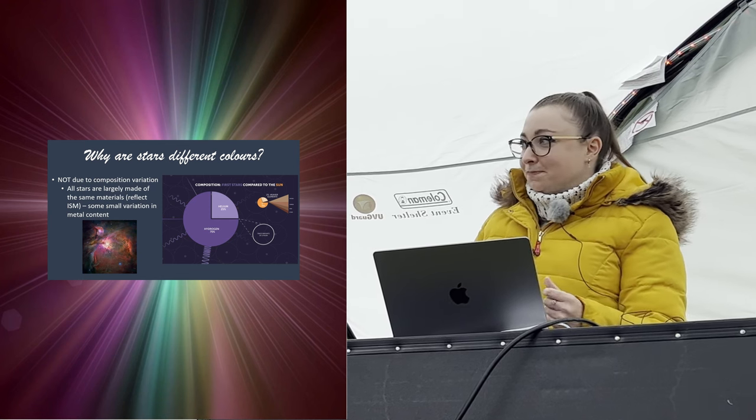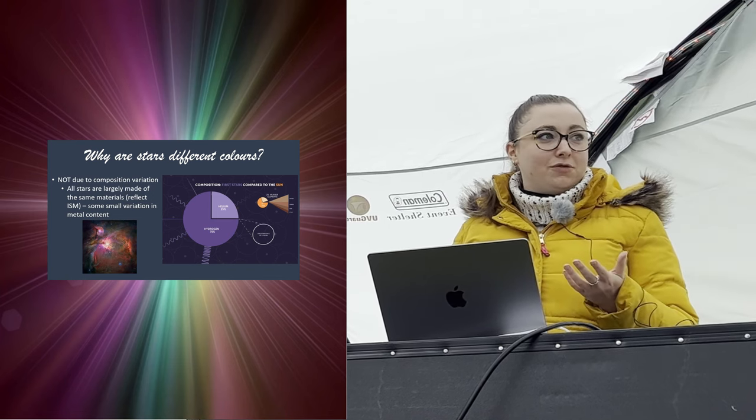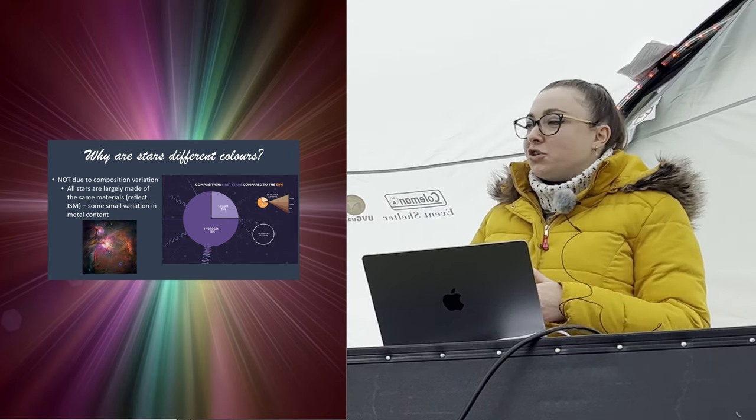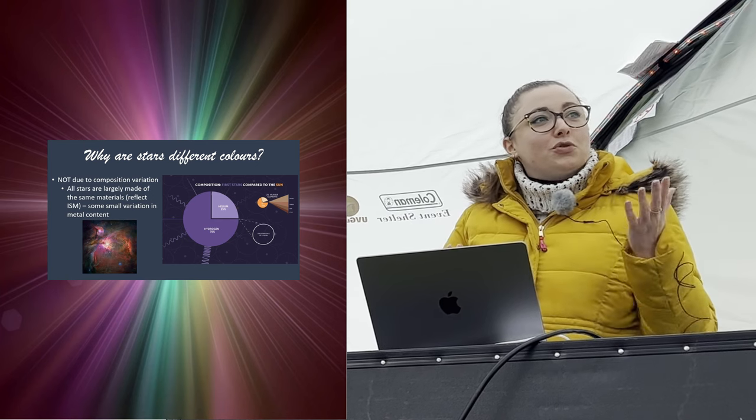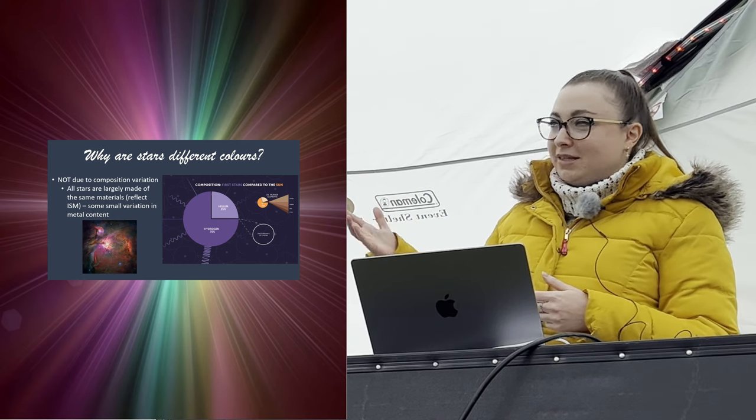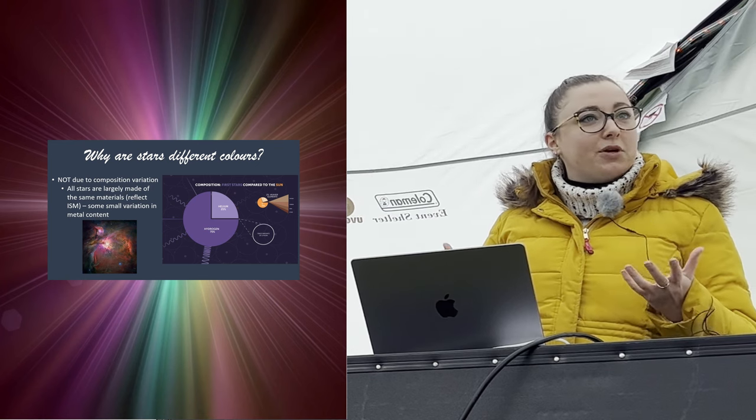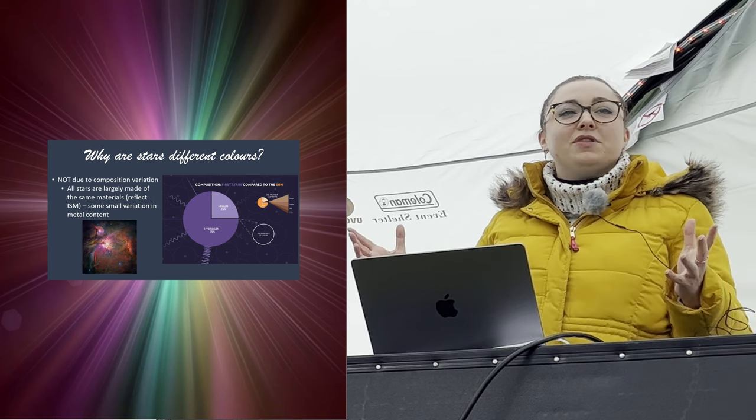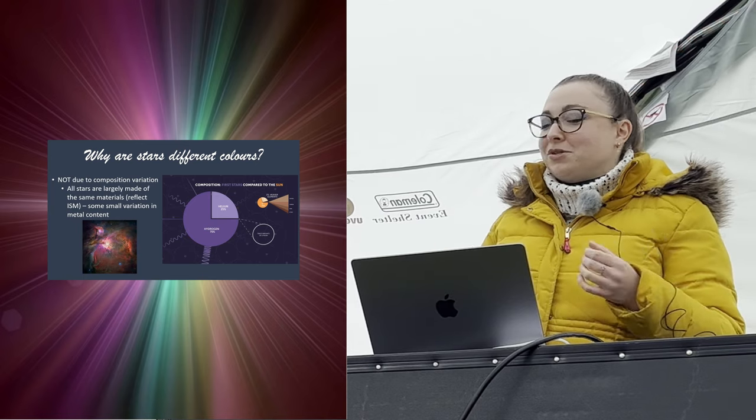Stars are about 75% hydrogen, about 25% helium, and then you have one, maybe two percent of these heavier elements, these metals. That's reflective of the interstellar medium from which these stars formed. Later generations of stars, our sun is a third generation star, so it forms from gas and dust that has been enriched by two previous generations of stars. Stars produce these heavier elements, these metals, during their lives and their deaths. When they explode as supernovae, if they're massive stars, they dump all of these heavy elements back into the interstellar medium.